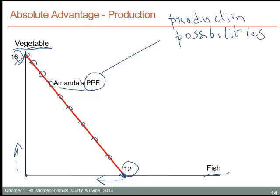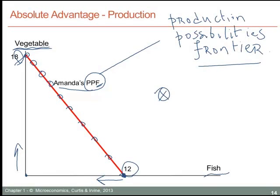These are Amanda's production possibilities. We use the word frontier to denote that there is a limit to what she can produce. She has been endowed with 36 hours of time, and consequently that puts a limit on the total goods she can produce. She would not be able to produce a combination represented by a point beyond this line. A point out there would represent more fish and more vegetable than she can achieve — the red line defines how much she can produce with available time, so by definition she cannot produce points beyond her production possibility frontier.